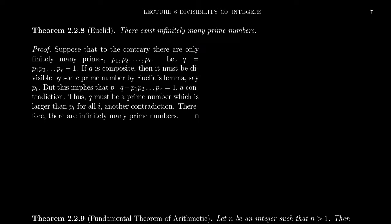This is a classic proof by contradiction. We suppose to the contrary that there's only finitely many prime numbers: p1, p2, up to pr. We construct a number q which is the product of all prime numbers and then add one to it.